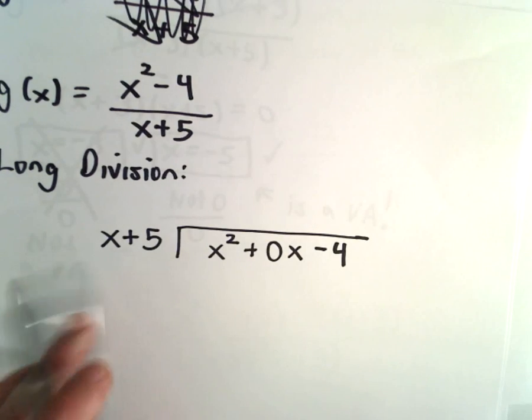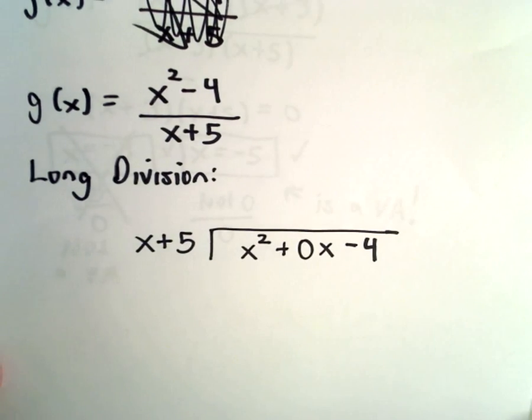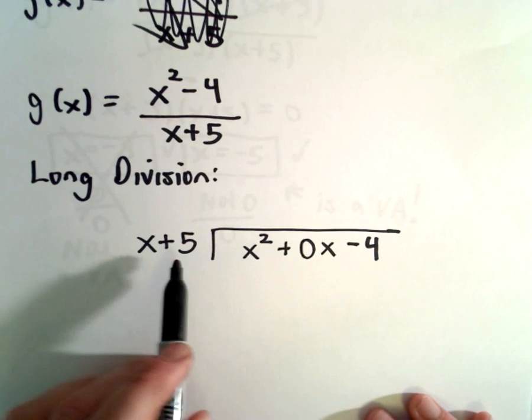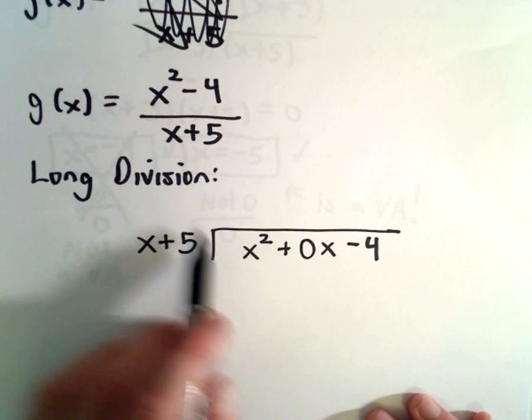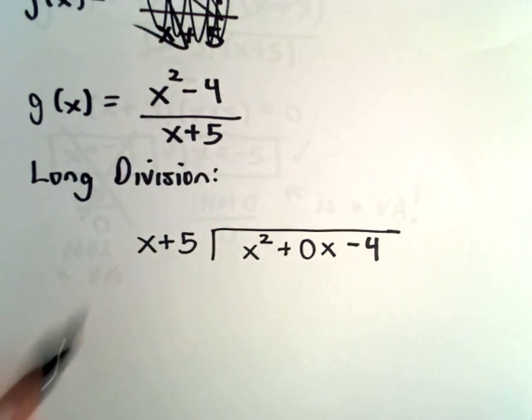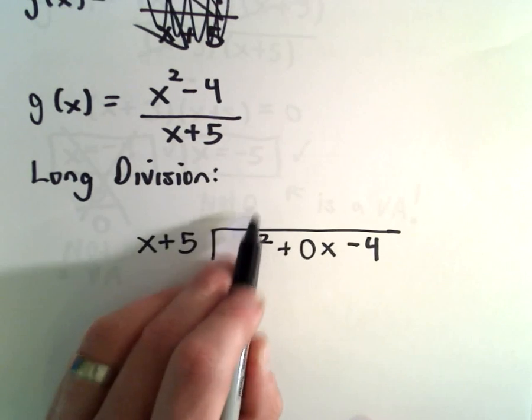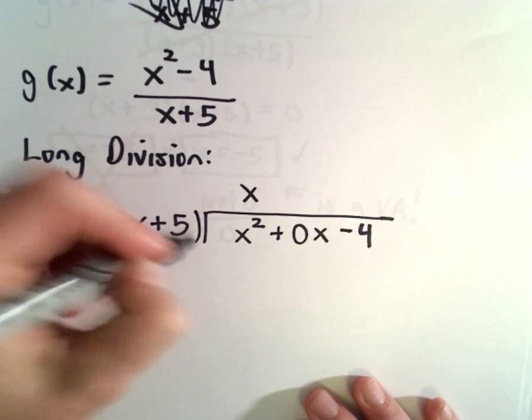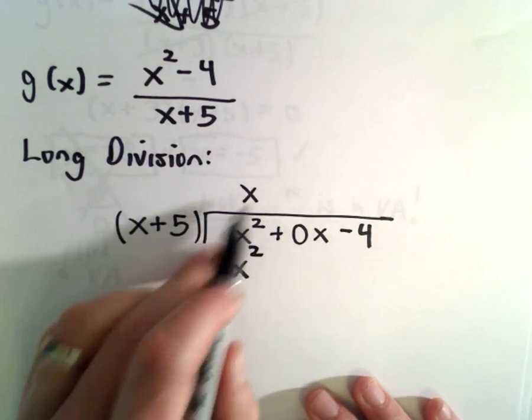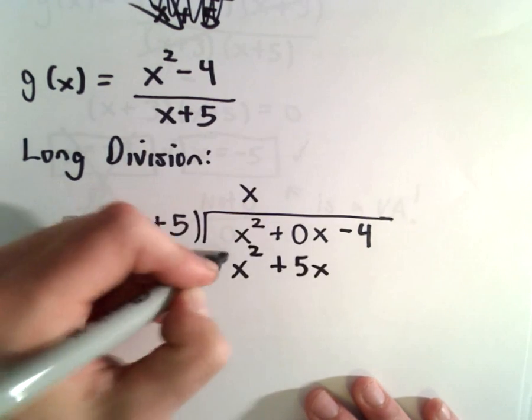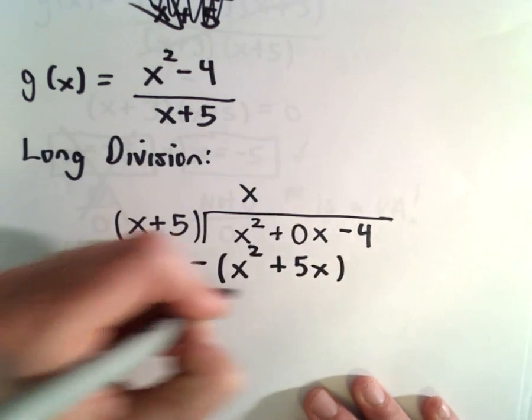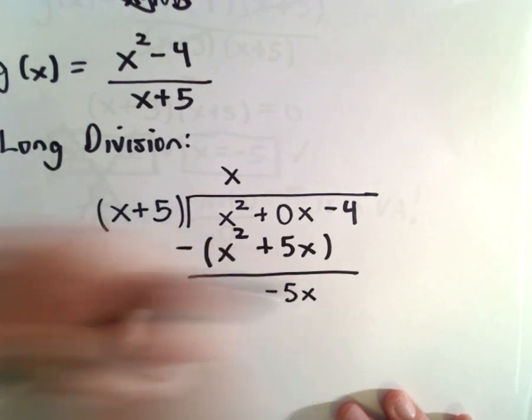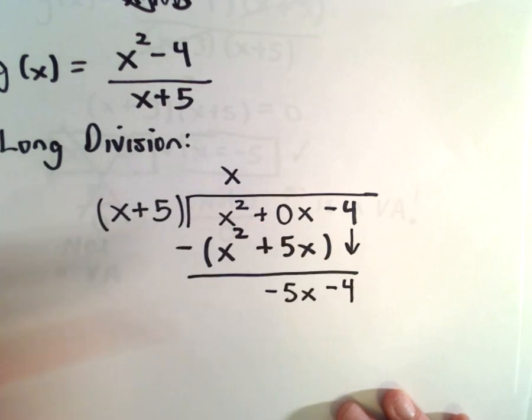Since we're dividing by a linear term, you could use synthetic division if you want. I'm going to use long division because it works even if you're not dividing by a linear expression. I think x times x, so x times x is x squared, x times positive 5 is positive 5x. Then we subtract. 0x minus 5x will be negative 5x. Drop down your negative 4.